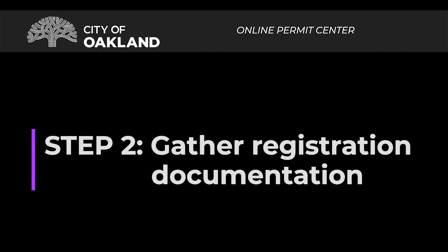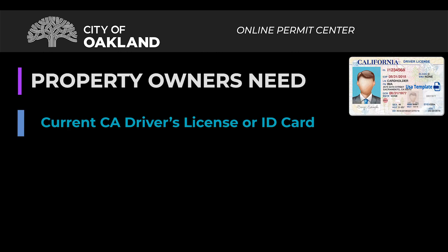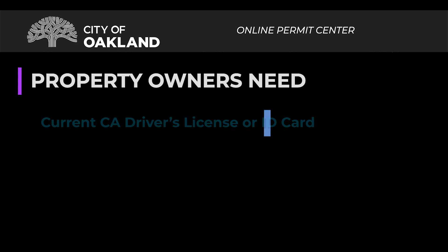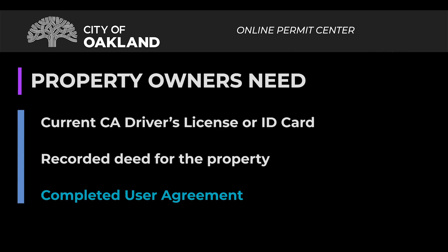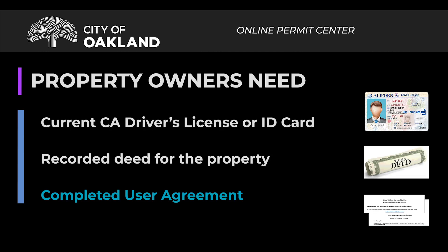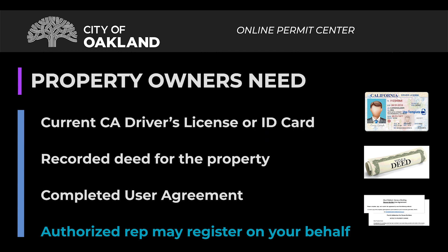Step 2. If you are applying for a permit as the property owner, you will need a current California driver's license or identification card, and a copy of the recorded deed for the property. You must also complete the user agreement. Your architect or representative may complete the online registration for you by completing the application and providing copies of information as described above. Be sure that they input their email address for registration access.